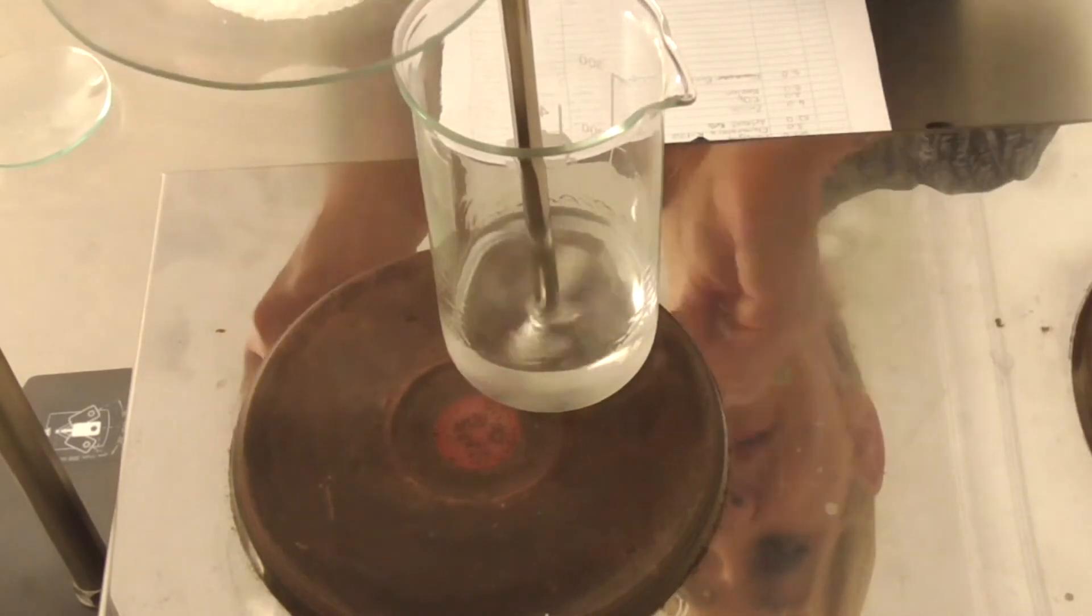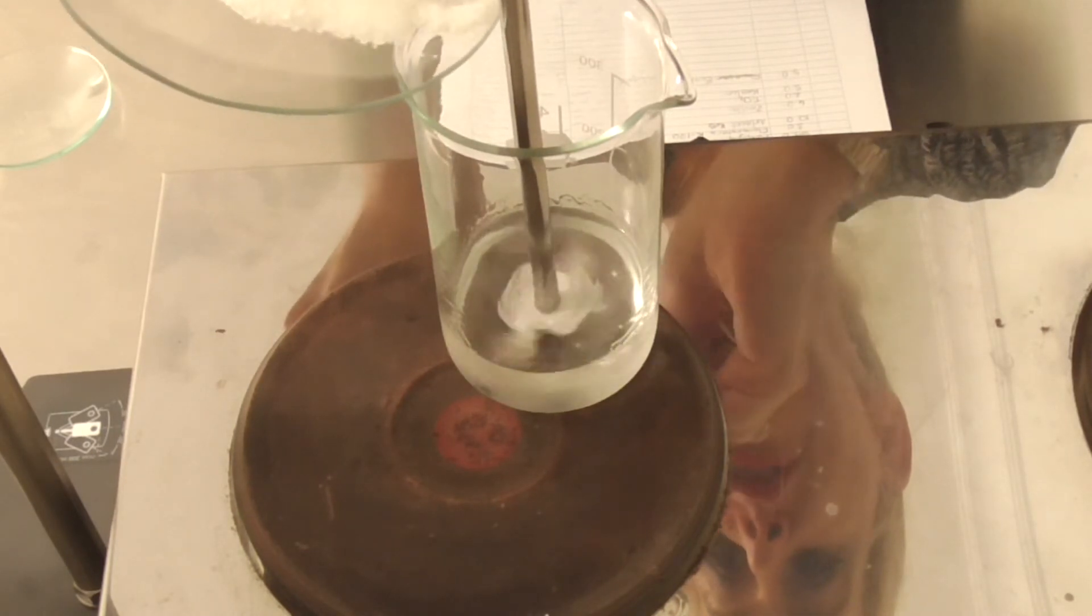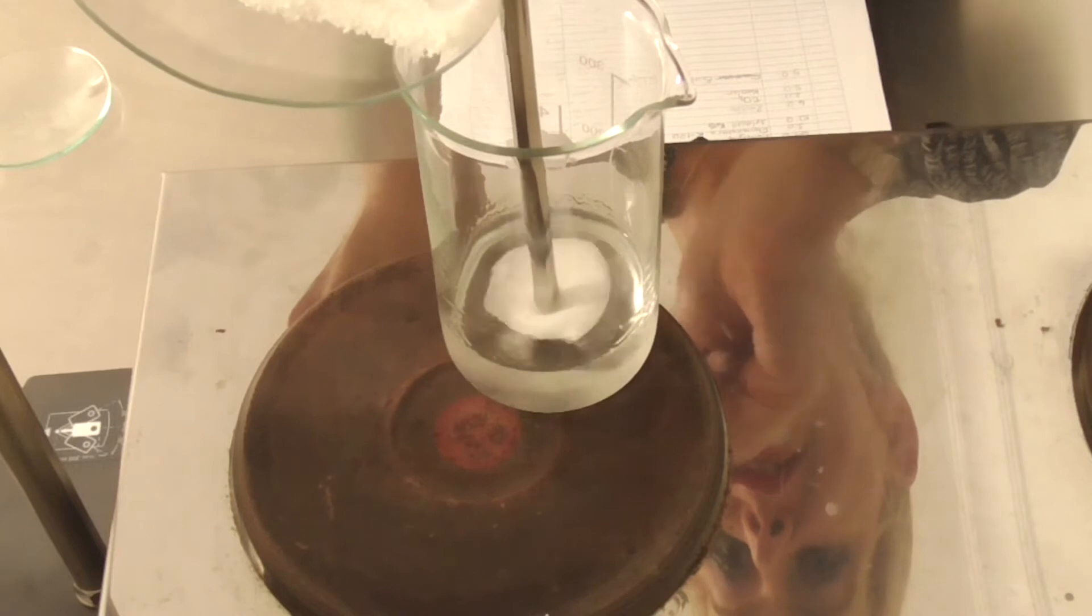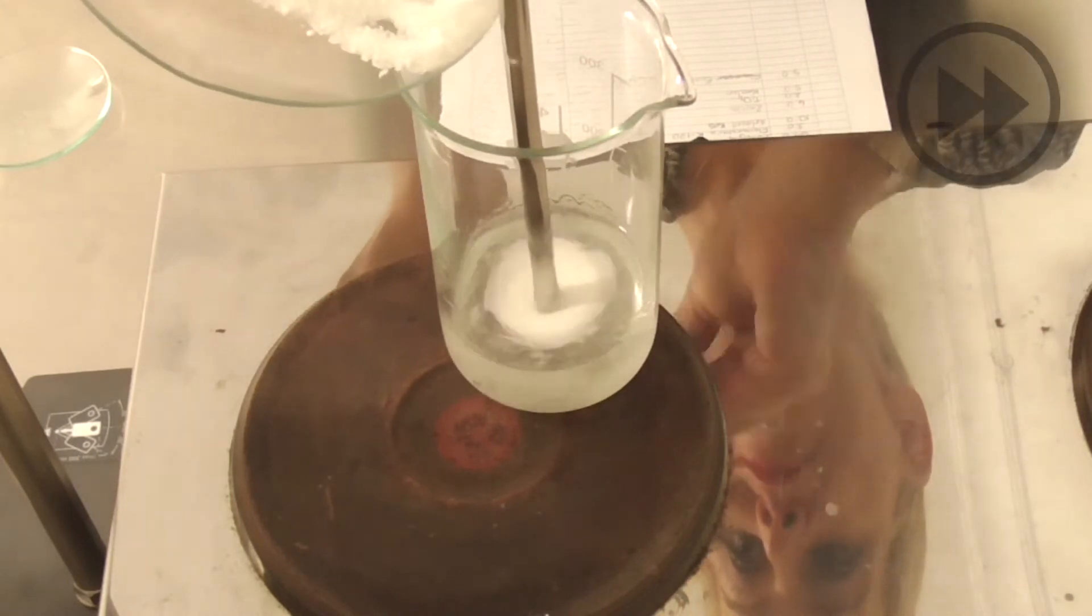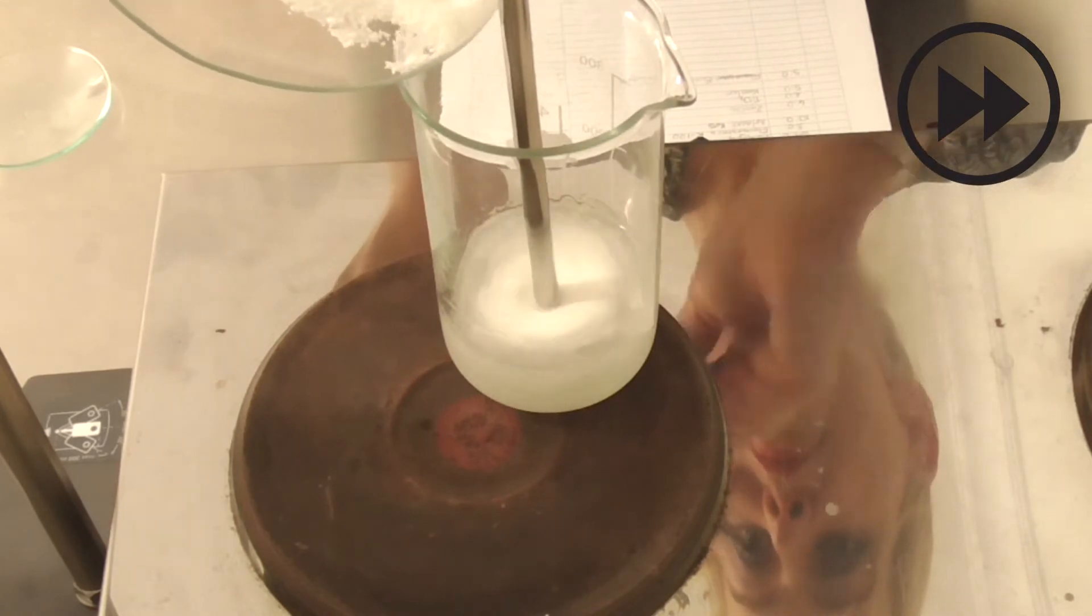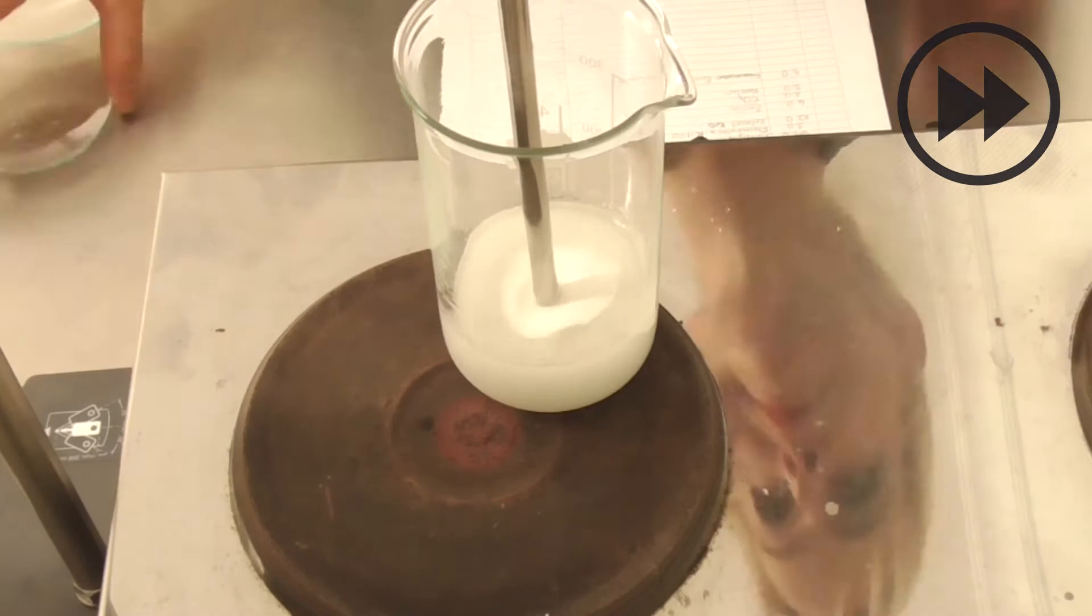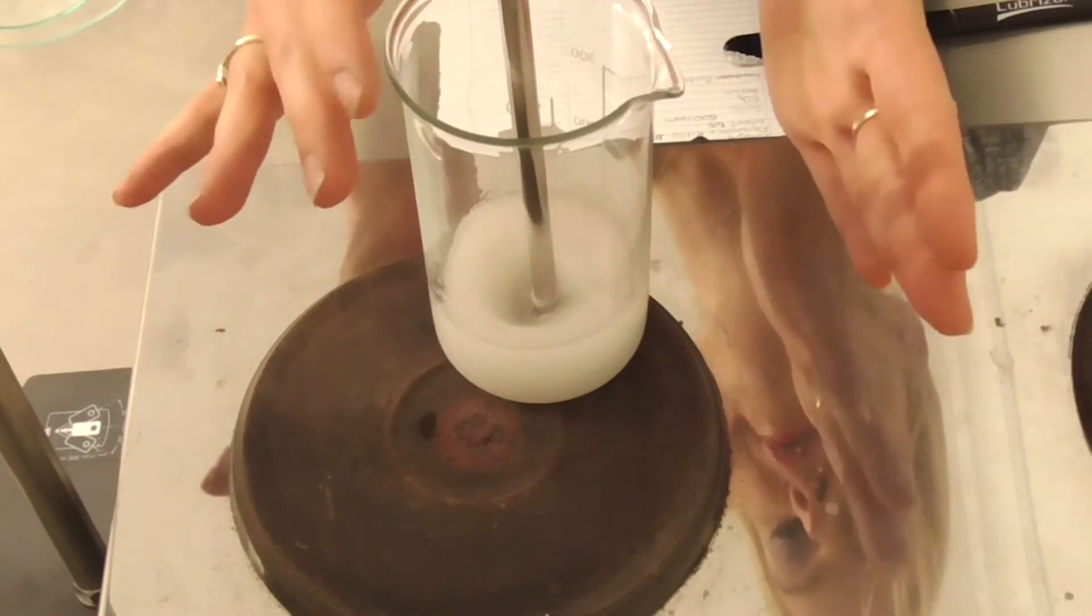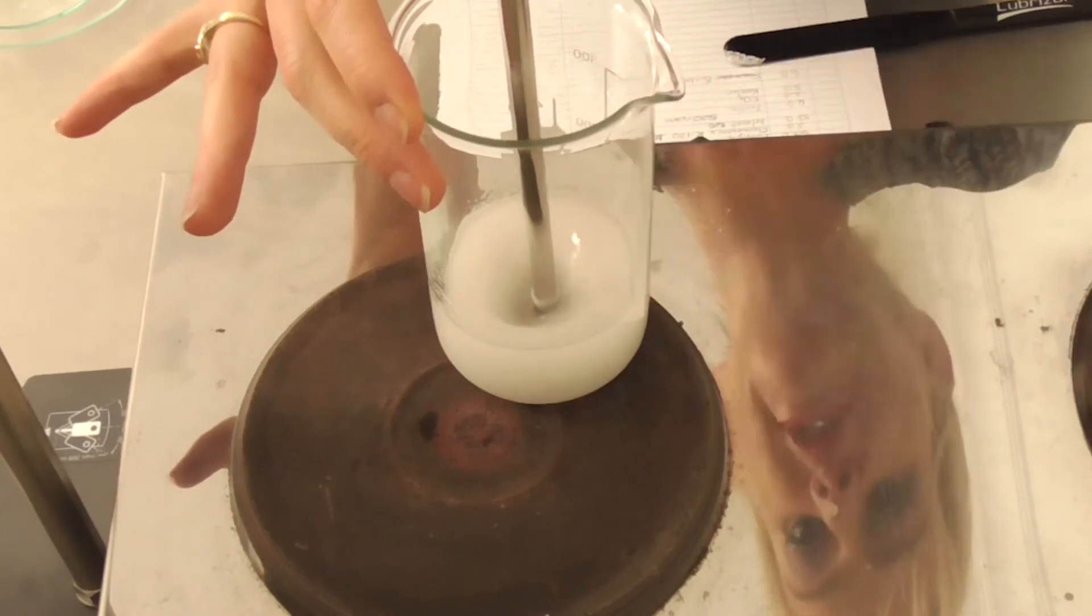Now I'm adding some Arlaseur 165. This is going to build structure and stability to this mask product. Now I just need to heat while mixing until it's all melted.